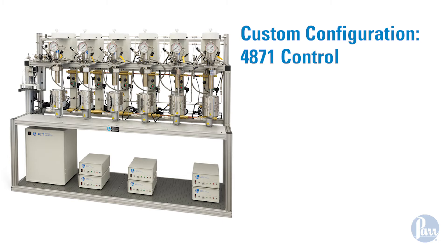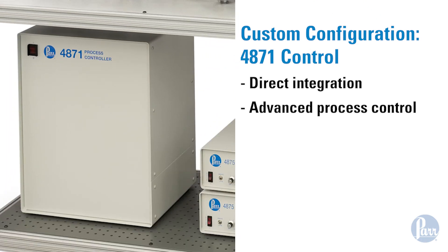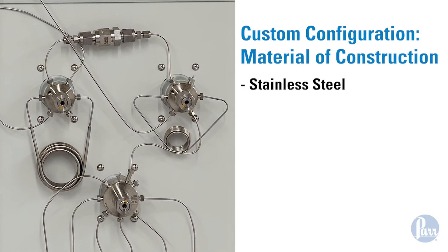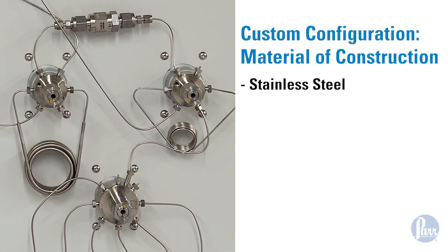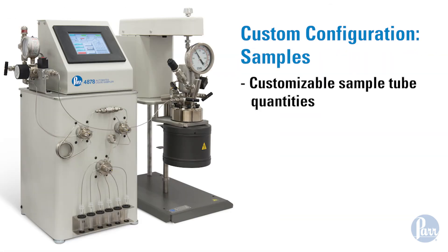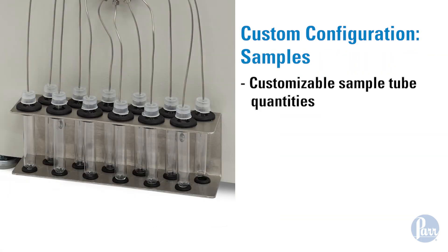Other customizations include direct integration into reactor systems and advanced control capabilities with a PAR 4871 process controller. Valves and tubing are offered in stainless steel, alloy C276, and titanium. While six samples is standard, up to 12 samples can be accommodated.